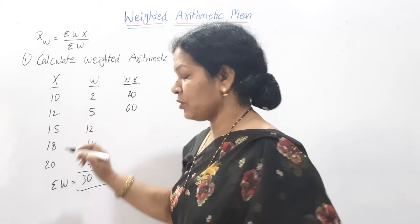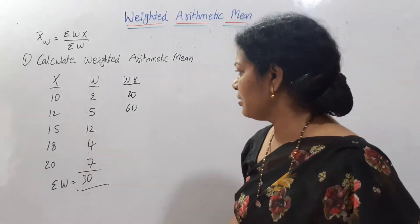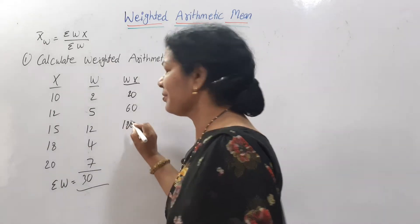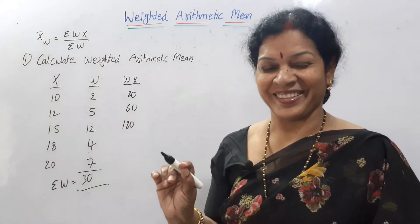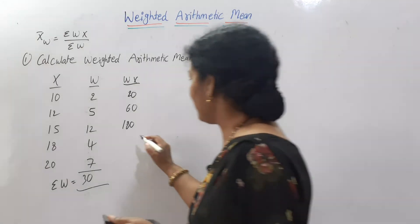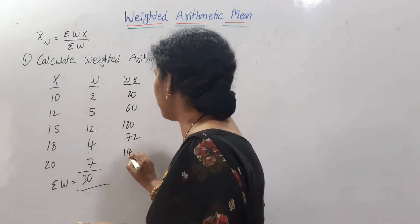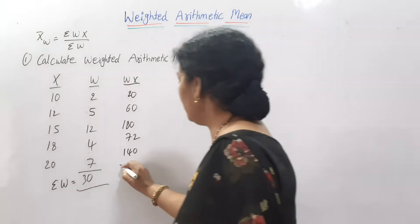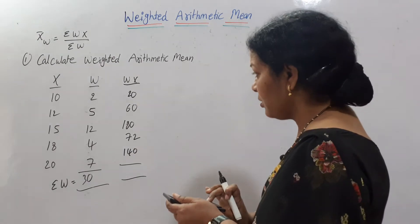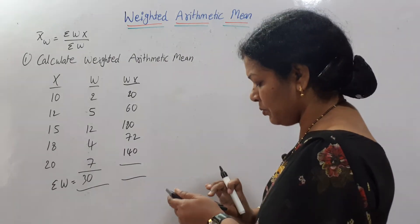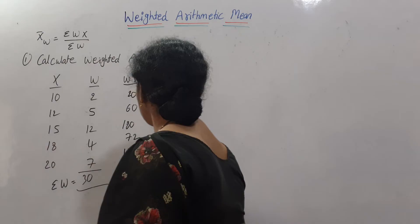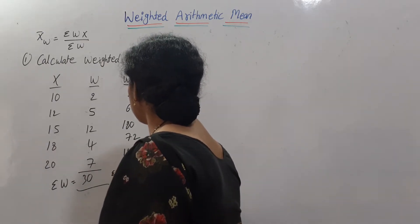Let me use the calculator. 15×12 = 180, and 18×4 = 72, 20×7 = 140. So if I calculate the total: 20, 20+60 = 80, here 200, 260, 260+72+140 = 472. This is Σwx.